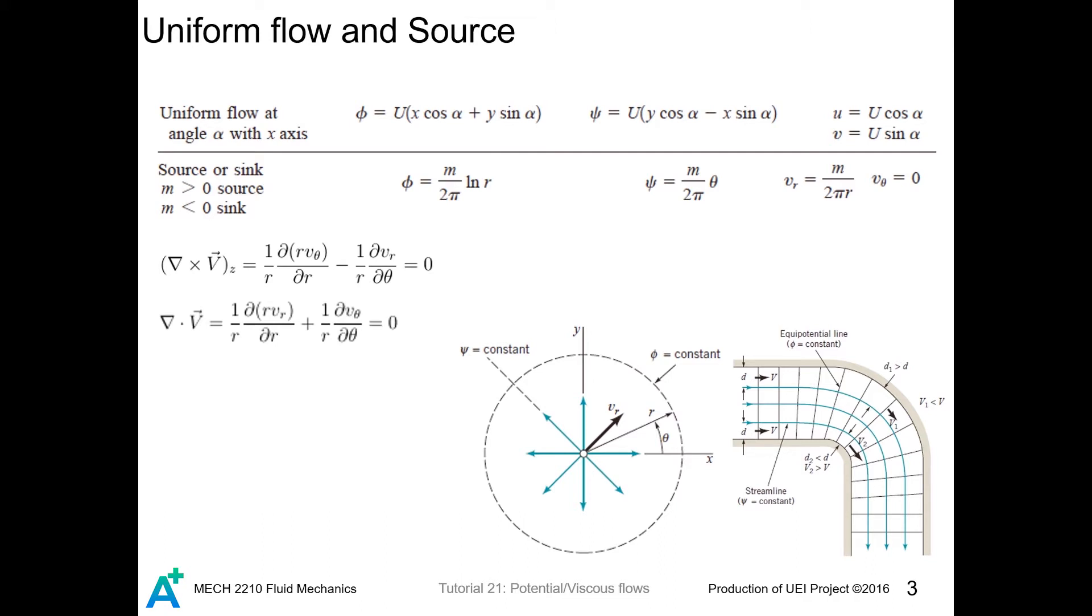For example, if we use the velocity field v equals u zero, then clearly this works. To prove this item in the table, we do a rotation on our velocity field, and then find psi and phi as in the previous video.